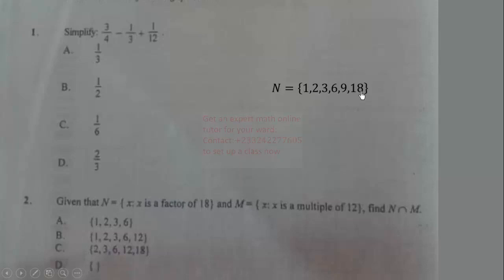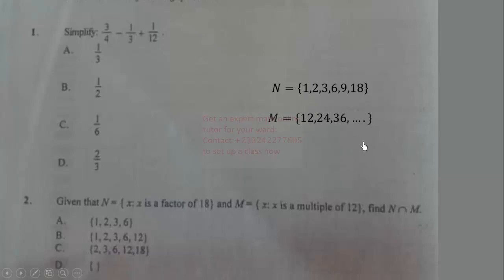The multiples of 12 are: 12, 24, 36, and so on. The intersection of these two sets contains elements common to both sets. There is no element common to the two sets, therefore M intersection N is the null set (empty set). The correct answer is option D.